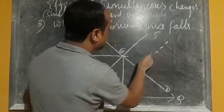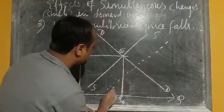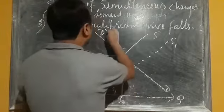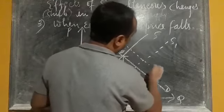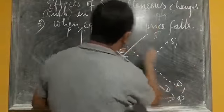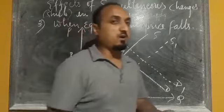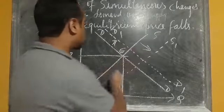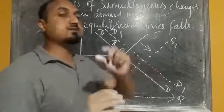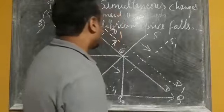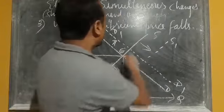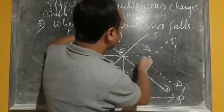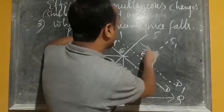If supply changes by a greater amount — supply increases from SS to S1S1 — and demand is only increasing by a smaller amount to D1D1, then the gap between supply and demand shows that supply is increasing by a larger amount while demand is increasing by only a smaller amount. The new demand curve D1D1 and supply curve S1S1 intersect each other at point E1.